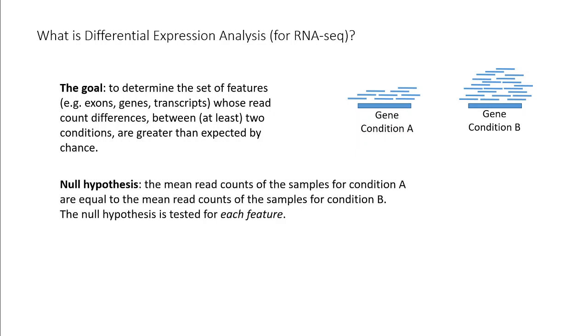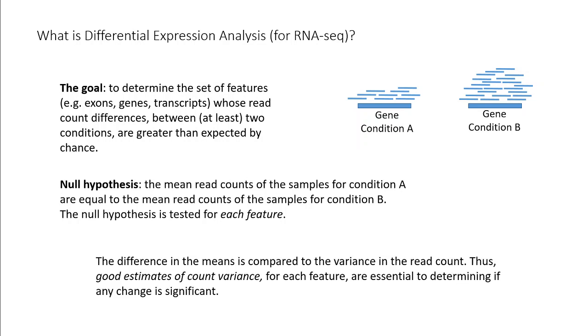In this case, the null hypothesis assumes the mean read counts for the samples in one condition are equal to the mean read counts for the samples in the second condition. This null hypothesis is tested individually for each feature. The differences in the means is compared to the variance of the read count in order to evaluate significance. Thus, good estimates of count variance for each feature are essential to determining if any change is significant.